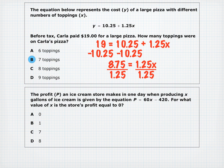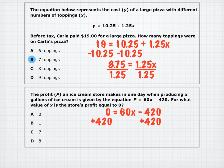The next example: the profit P of an ice cream store producing X gallons is P equals 60X minus 420. For what value of X is the profit equal to zero? Plug in 0 for P, then add 420 to both sides to get 420 equals 60X. Divide both sides by 60 to get X equals 7, answer C.